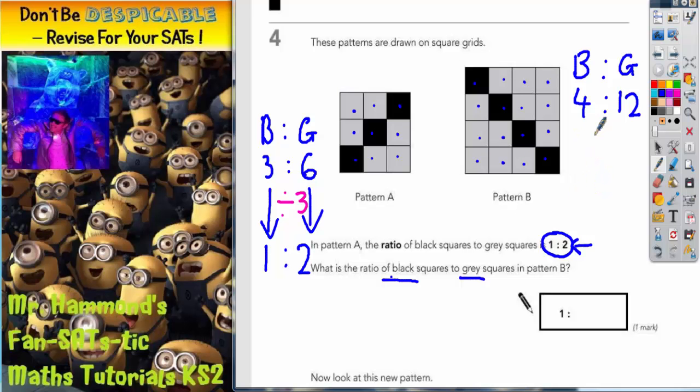If we simplify this ratio, what's the biggest number that we can divide both 4 and 12 by? Well, both of these numbers are in the 4 times table, so we can divide by 4. 4 divided by 4 is 1, and 12 divided by 4 is 3. So there you have it: 4 to 12 simplifies to a ratio of 1 to 3. So the final answer that you need to write in the answer box, we've already got the 1 there, so all we need to do is write the 3 in.